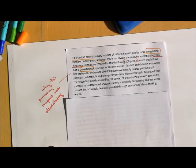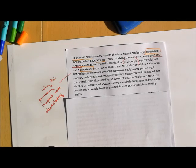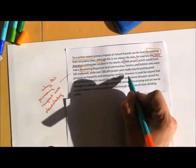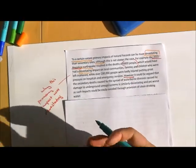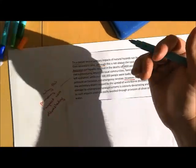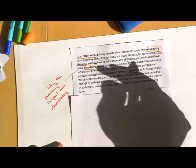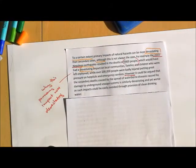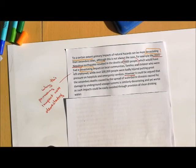However, it could be argued that the secondary deaths caused by the spread of waterborne diseases caused by damage to underground sewage systems is similarly devastating, and yet worse, as such impacts could be easily avoided through provision of clean drinking water. So there's that connective, however, showing that second side of the argument. You see the way it's blended. I've given the importance of a primary impact, now I'm talking about the importance of a secondary or long-term impact. And this is where, as I said to you, though it is up to you, I think it's easier to argue that secondary impacts are worse, because they are generally quite avoidable.